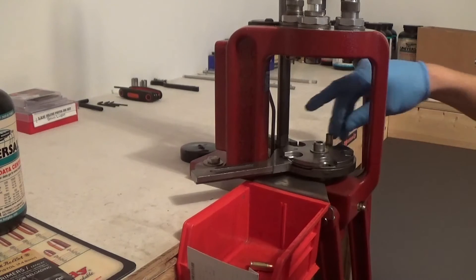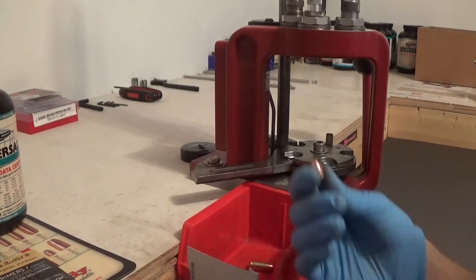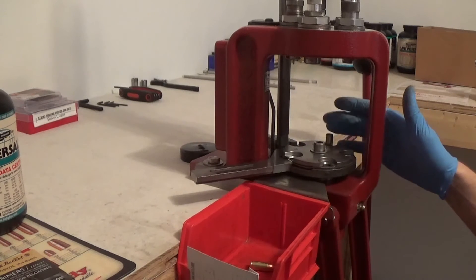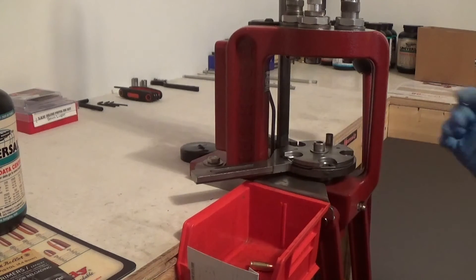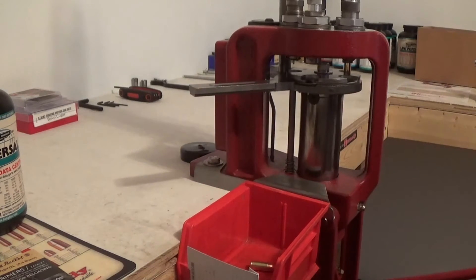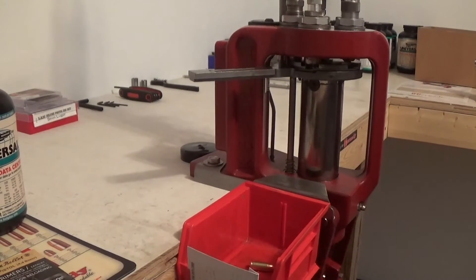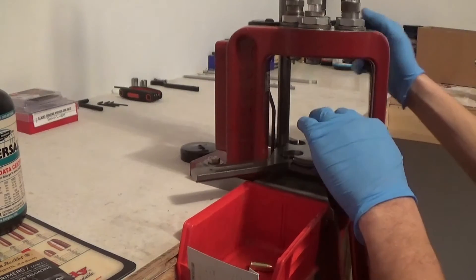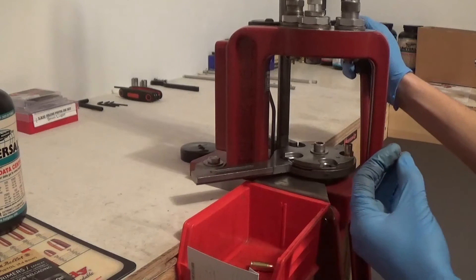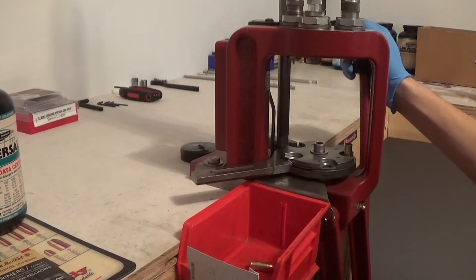So that just makes it easier and it keeps you from risking knocking the plating off the bullet with your belled out case. It makes it easier to receive a bullet. That's all it is. Now we're getting a charge of 4.8 grains of Universal. So now we have our powder charge.